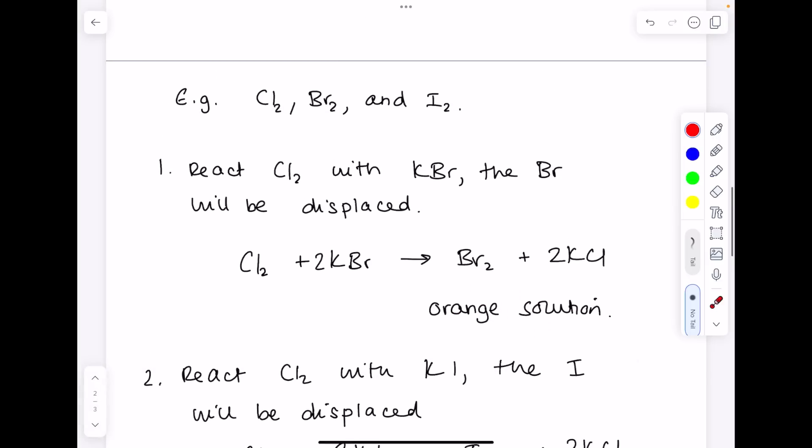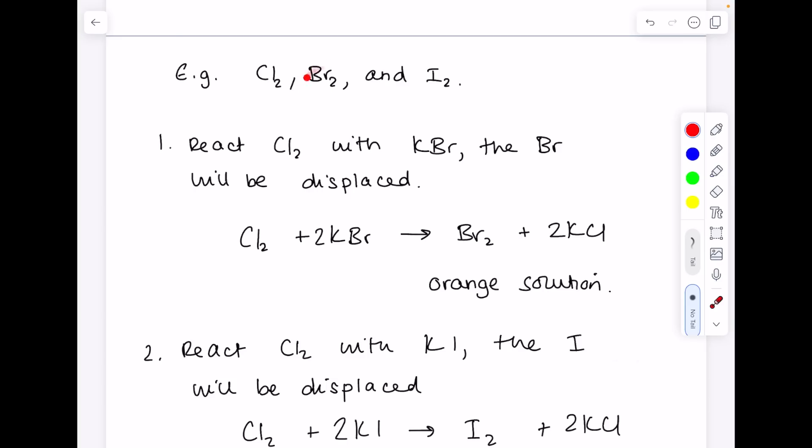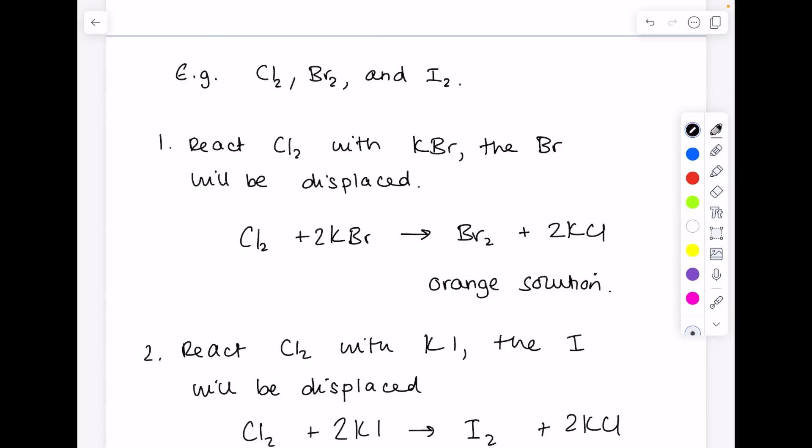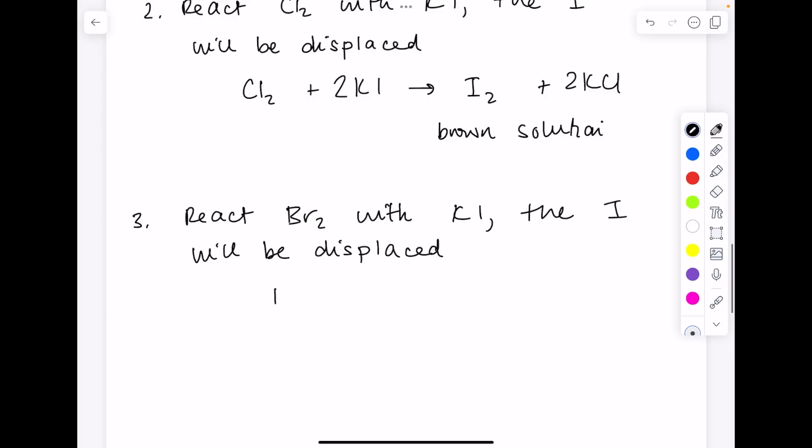Remember, observations is saying what you see. To prove that bromine is more reactive than iodine, this time we're reacting bromine with potassium iodide, the iodine will be displaced according to the following equation.